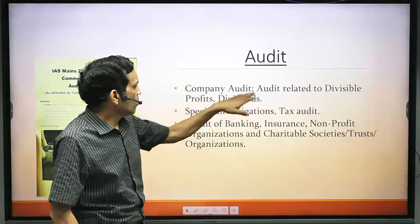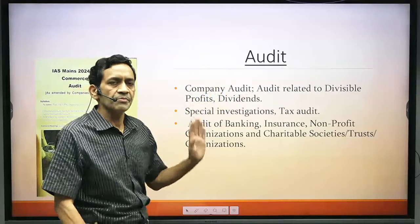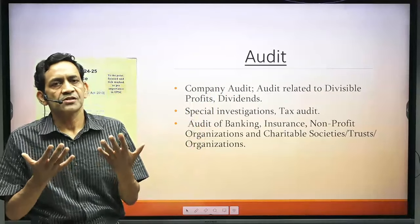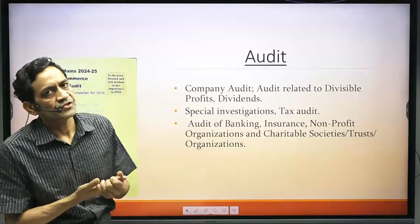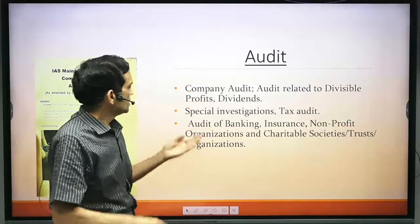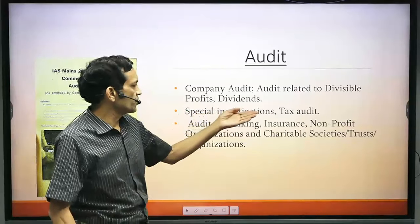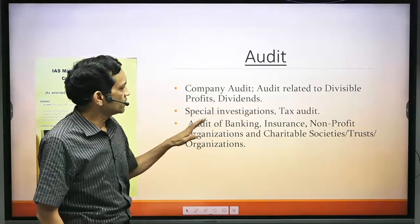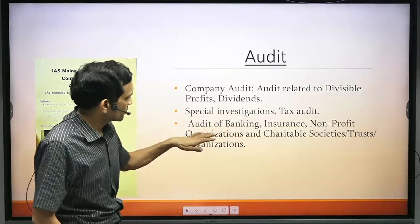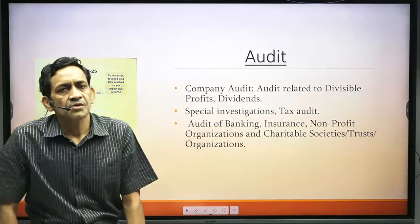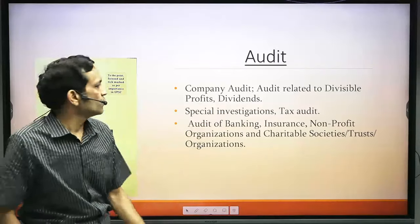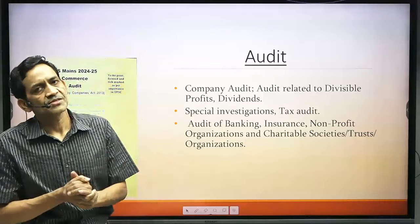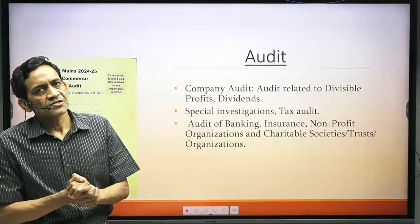Audit is the smallest topic in the entire syllabus — around 45–50 pages total. It covers Company Audit (appointment, removal, rights, duties, liabilities, qualifications, disqualifications), Audit of Divisible Profit and Dividends, Special Investigations (~6 pages), and Audit of Banks, Insurance Companies, Non-Profit Organizations, and Charitable Organizations. Questions are quite predictable here, and around 35 marks of questions come from this section.